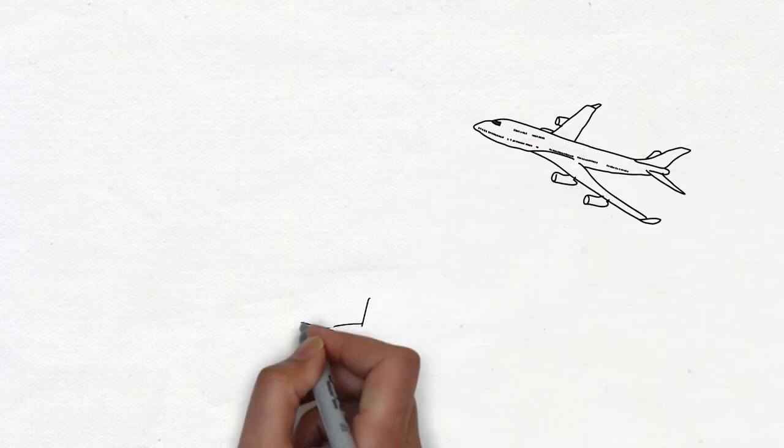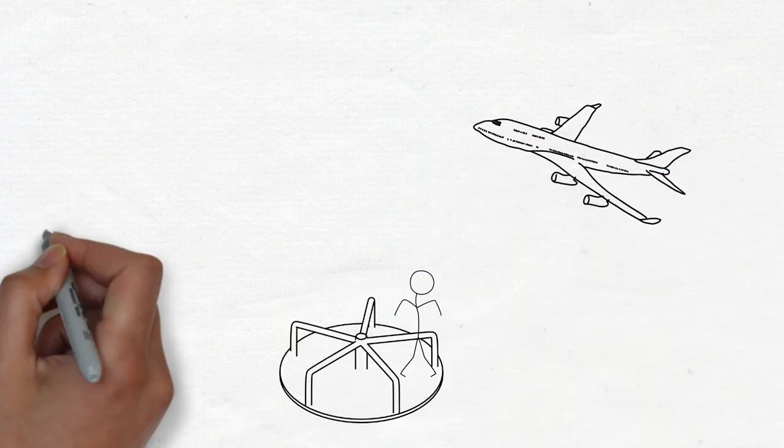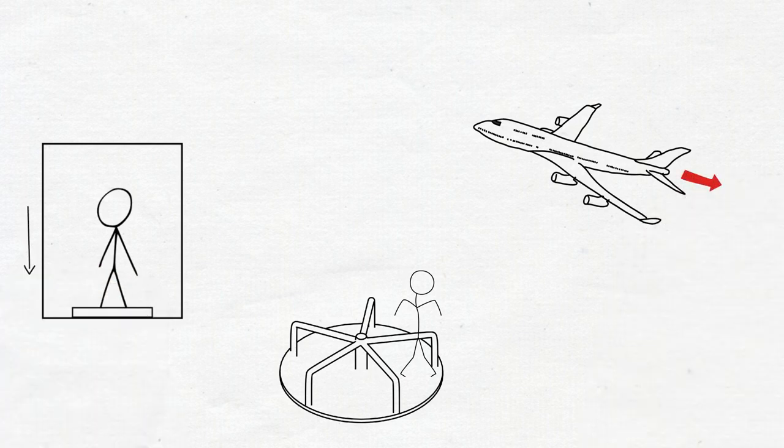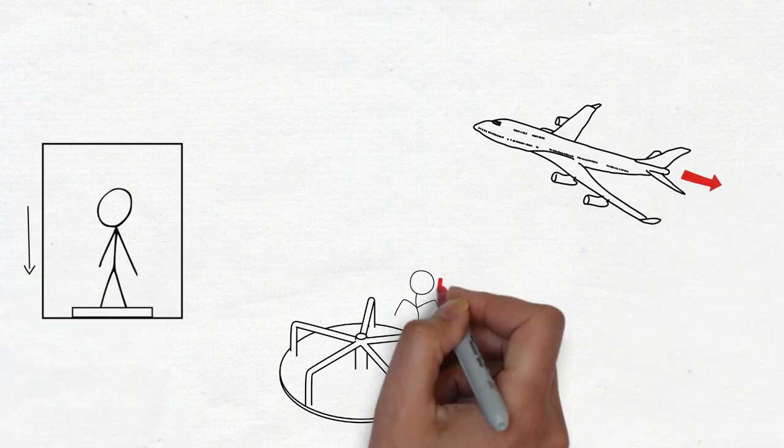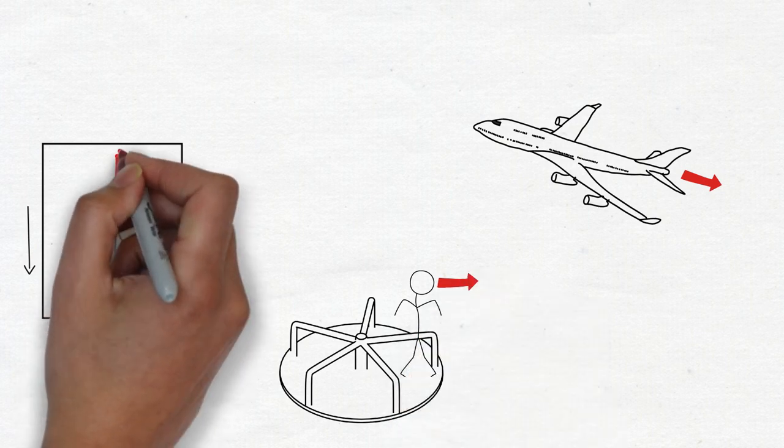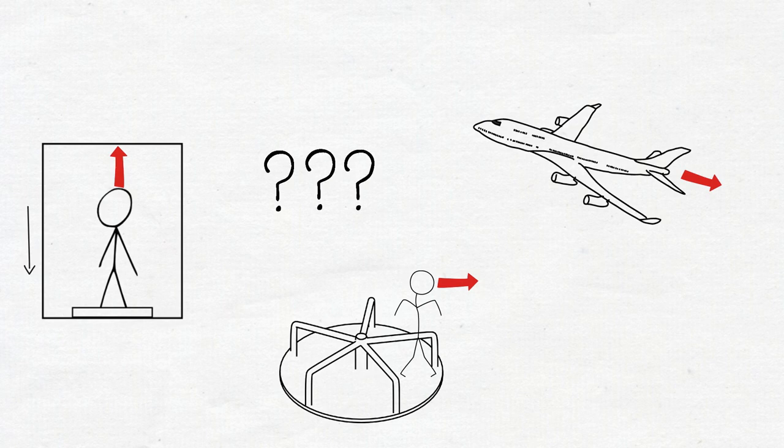Consider taking off on an airplane, now riding a merry-go-round and finally going down in a lift. On the airplane you'd feel as if you're being pushed backwards into your seat. On a merry-go-round you'd feel as if you're being pushed outwards. On the lift you'd feel as if you're floating. Now what do all these events have in common?